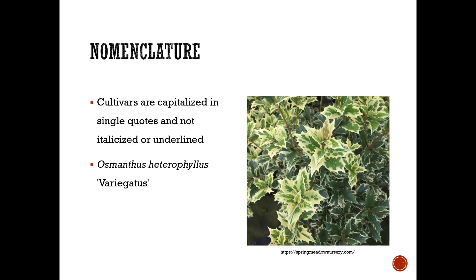Cultivars are capitalized and written in single quotes, and they are not italicized or underlined. A cultivar is a plant variety produced in cultivation by selective breeding. For example, Osmanthus heterophyllus 'Variegatus' is a variegated form of Osmanthus heterophyllus.